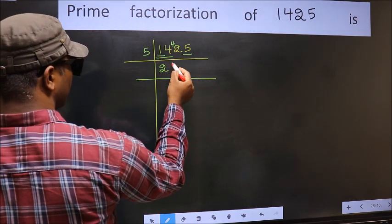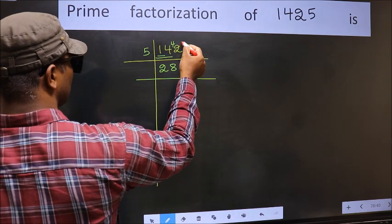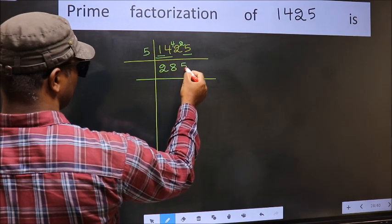A number close to 42 in 5 table is 5 times 8 is 40. 42 minus 40 is 2, 2 carried forward makes 25. When do we get 25 in 5 table? 5 times 5 is 25.